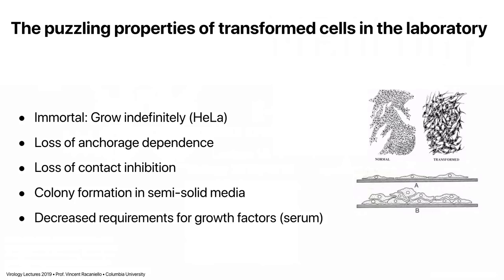Transformed cells don't have anchorage dependence anymore. They don't need to be attached to a monolayer to grow. Most primary cells like to be attached to a monolayer. Transformed cells tend to pile up on one another and can even grow in liquid. They don't have contact inhibition — normal cells, when they touch each other, stop growing. Transformed cells pile up on top of one another. They will make colonies in semi-solid media. A normal cell will not, because it needs growth factors produced by its neighbors. So transformed cells have decreased requirements for growth factors, which we typically supply in serum.